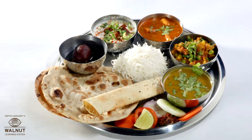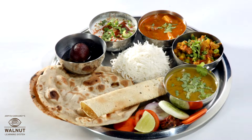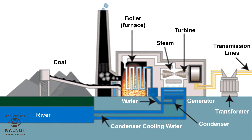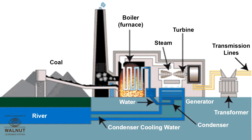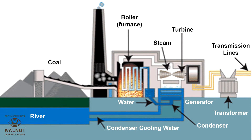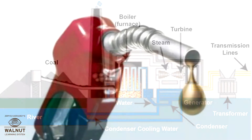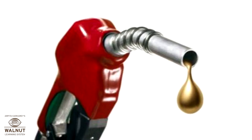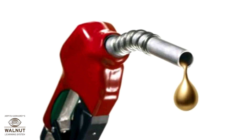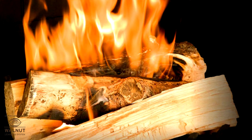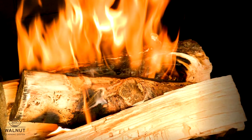All our food, water and minerals come from nature. We also use natural resources to make electricity. We use the energy of coal and flowing water. We use the energy in mineral oil through petrol, diesel and kerosene. We use the energy of plants when we use firewood.